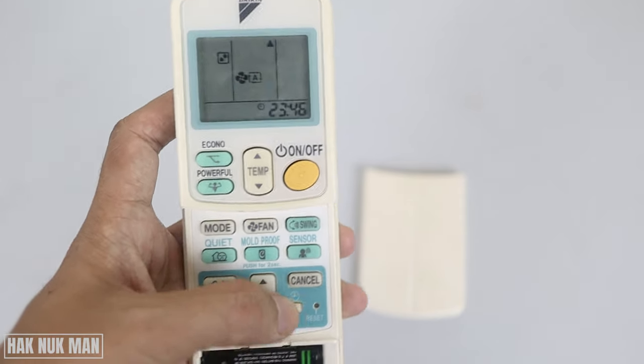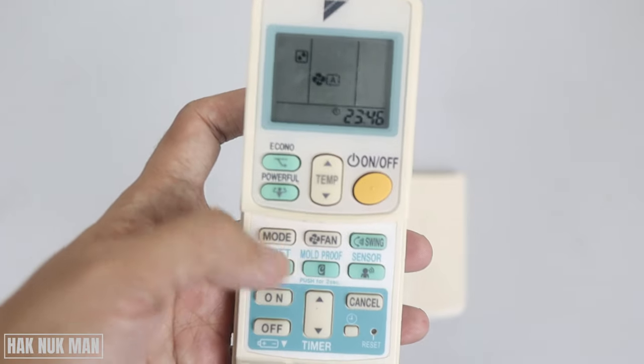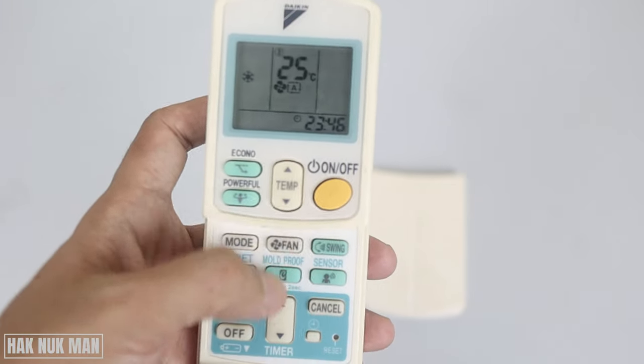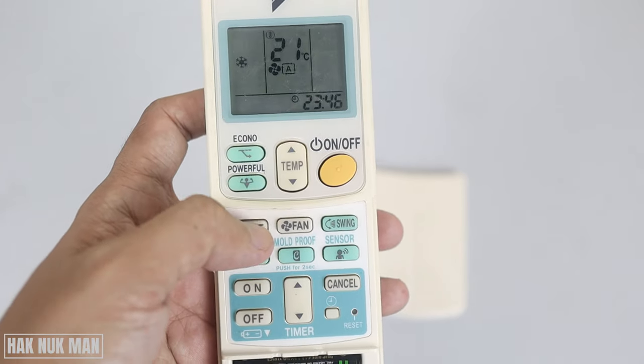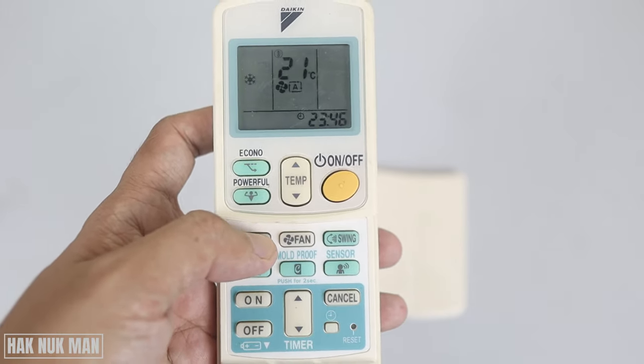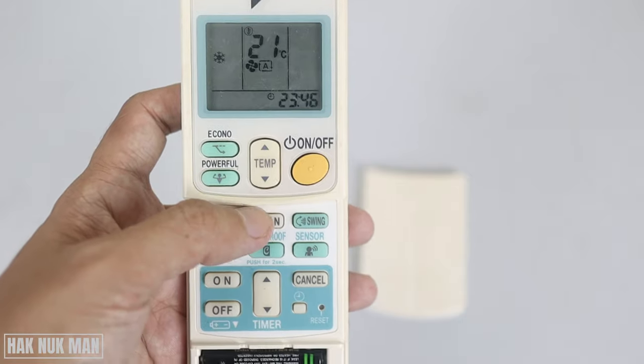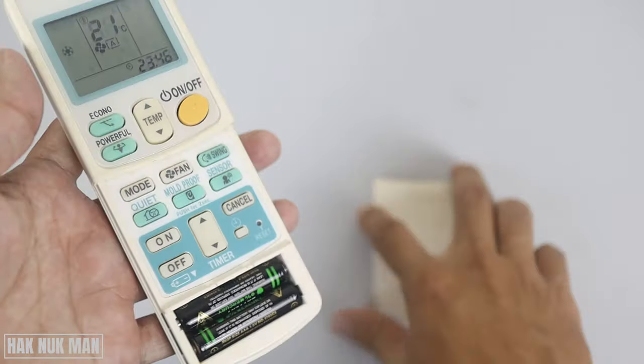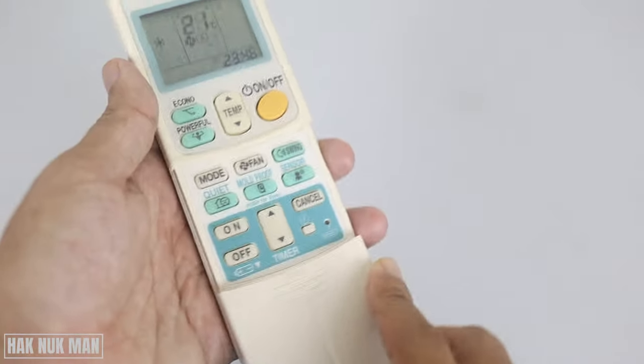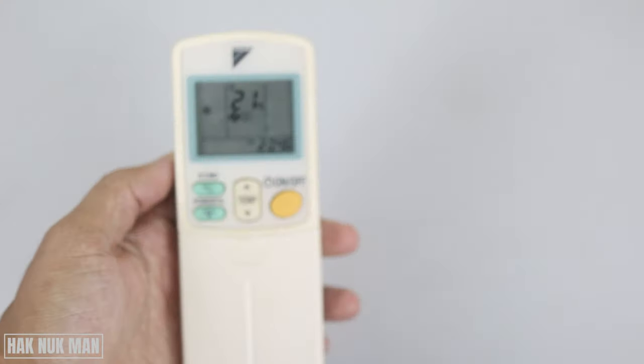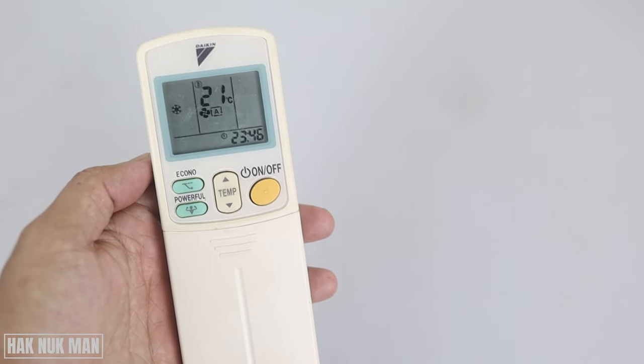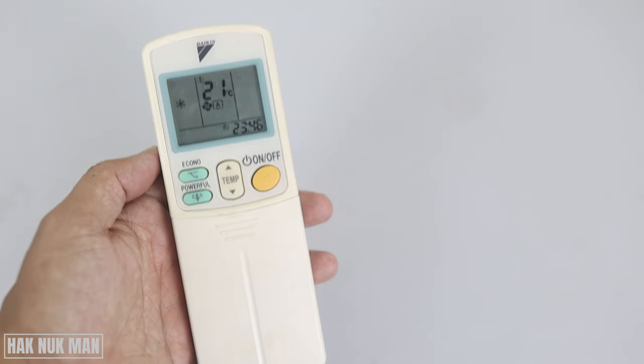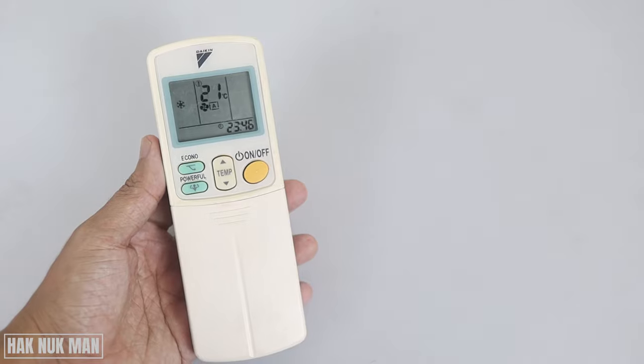Okay, after that, we can now change the temperature and the mode button. Everything is working again, and we just put the cover back to the remote control. And that's all. That's all for today's video on how you can reset the Daikin air conditioner remote control.